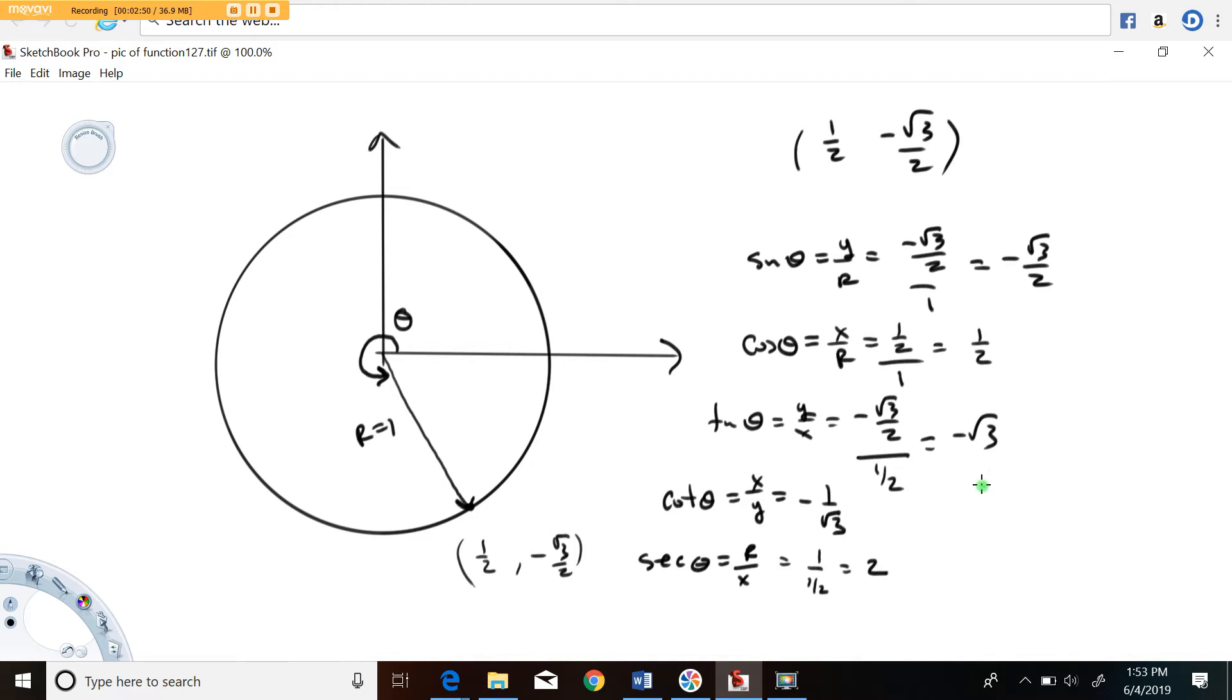And last but not least, the cosecant function. Cosecant theta is defined as r over y. It ends up being the reciprocal of the sine function.